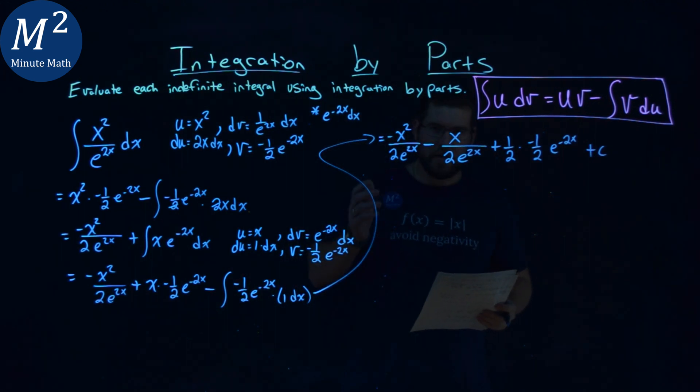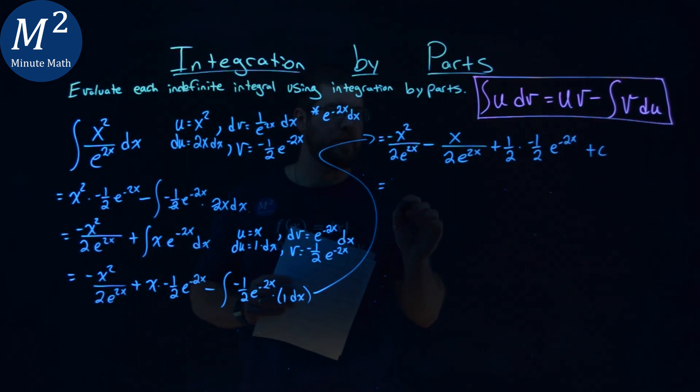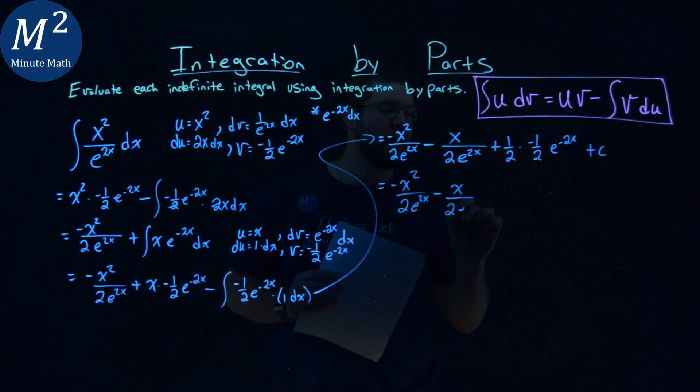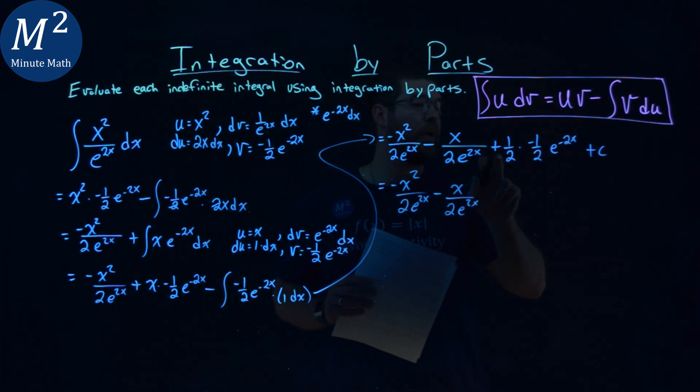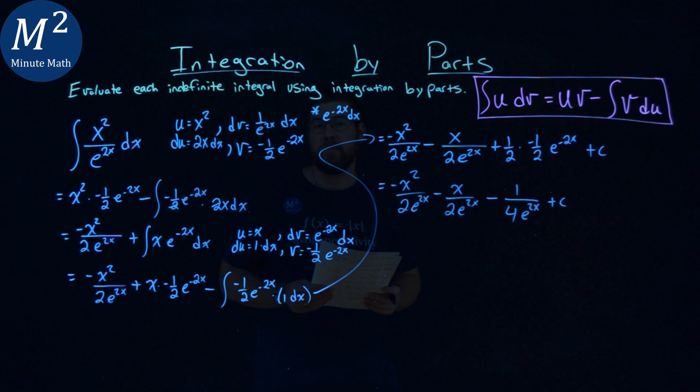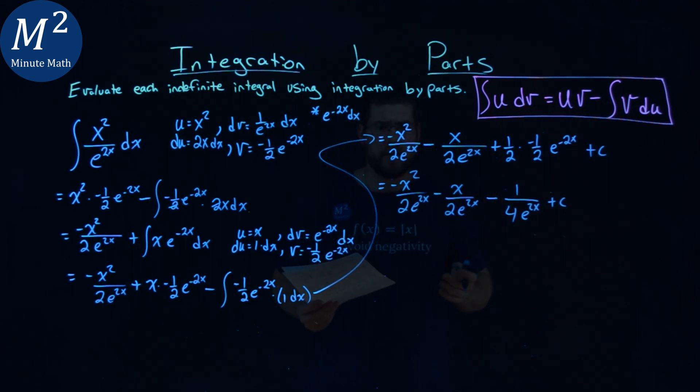So all the calculus is done now. Let's go simplify this out a little. Negative x squared over 2 e to the 2x power minus x over 2 e to the 2x power, or actually minus, sorry, 1 half times 1 half is 1 fourth, but it's a minus here. 1 over 4 in the denominator, and then e to the positive 2x power plus c.